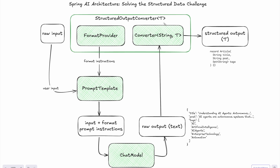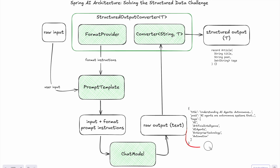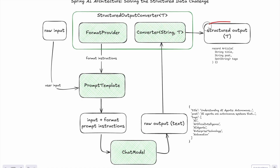Spring provides us what's called a structured output converter, which consists of two parts: a format provider and a converter. The way it works — we take the raw input, we take some format instructions, and we generate a prompt template combining these two. We send this combination to the chat model, and we get back raw output as text — it still looks like JSON but it's raw text. Then we have the converter, which knows how to generate the proper structured output, like a Java record. This is the basic architecture of Spring AI and how it works with structured data.